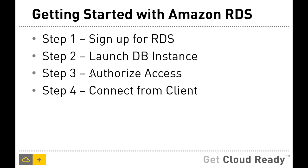Let's get started with Amazon RDS. There are basically four steps: first, signing up for RDS; second, launching the database instance; third, configuring security and authorizing access; and finally, connecting from the client and using the database provisioned within RDS.